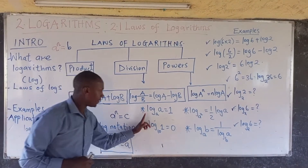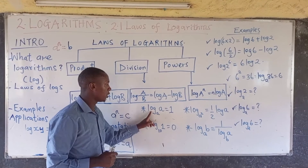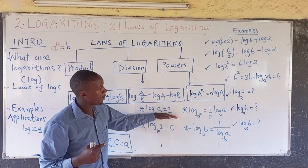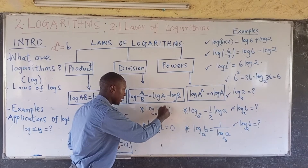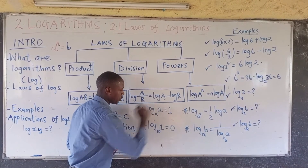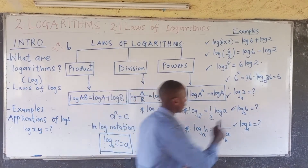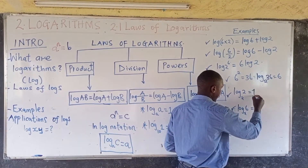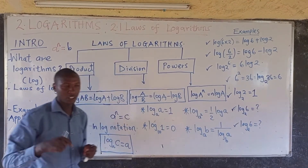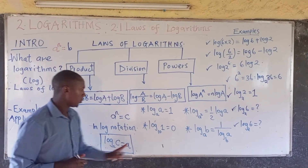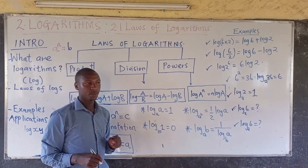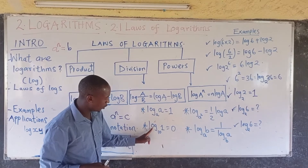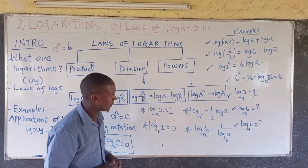We also have the law that if you have log of A to base A, the result equals 1. So if the number and the base are the same, the result is exactly 1. For example, log of 2 to base 2 equals 1, and log of 10 to base 10 equals 1. Also, log of 1 to base 10 must equal 0.